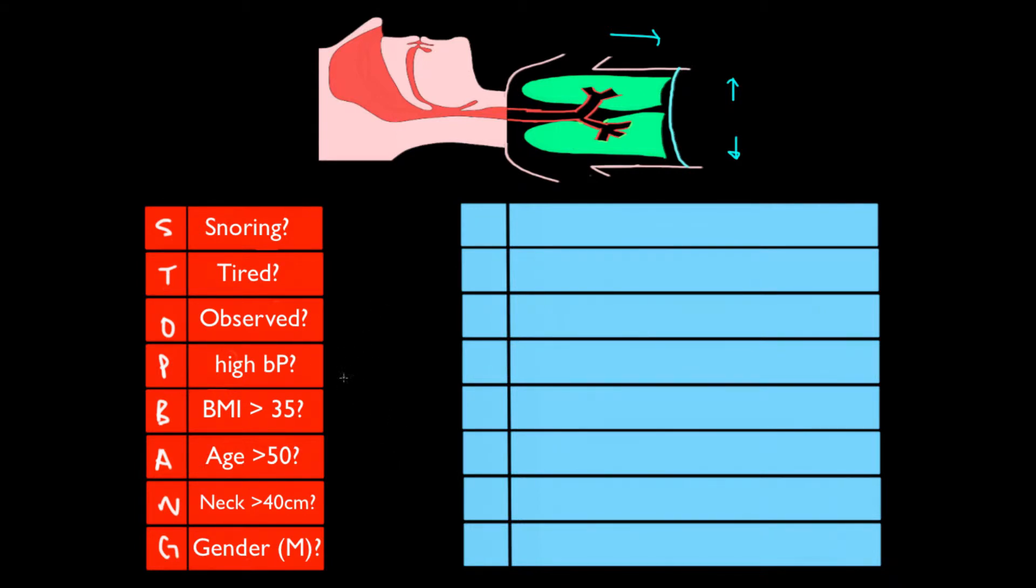With the Stop Bang Questionnaire, these are all yes or no questions, and you're looking for three or more yeses. If you get that, this person has an increased risk for obstructive sleep apnea. This questionnaire, though, is not very sensitive or specific. You can imagine it's possible to have three or more yeses and still not have obstructive sleep apnea. In fact, the likelihood ratio for this test is only 1.5, which isn't that great. That's why this is a screening tool, not diagnostic.